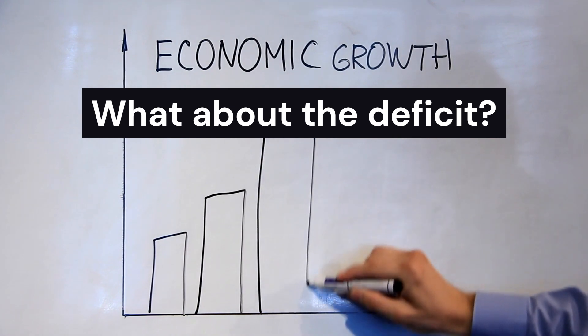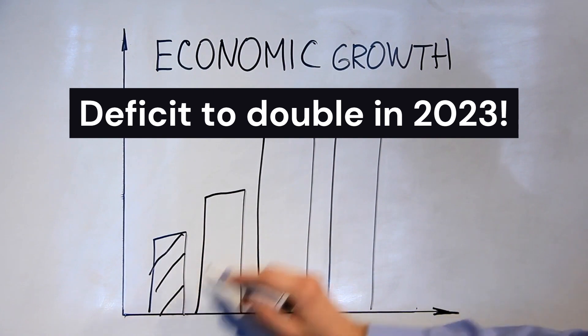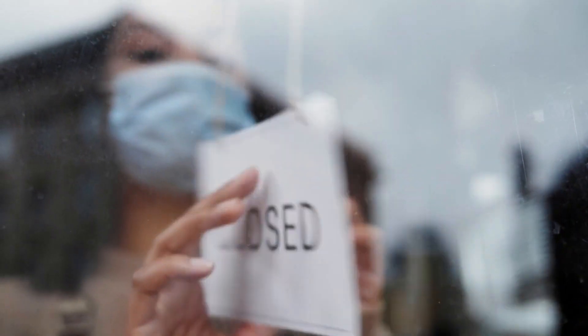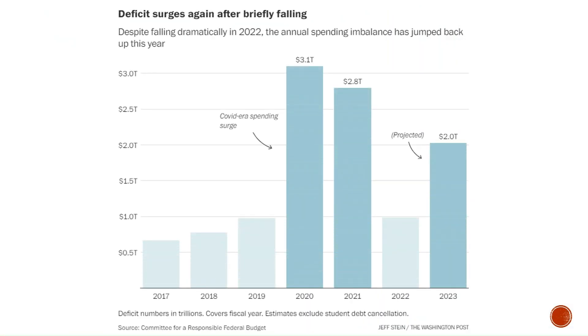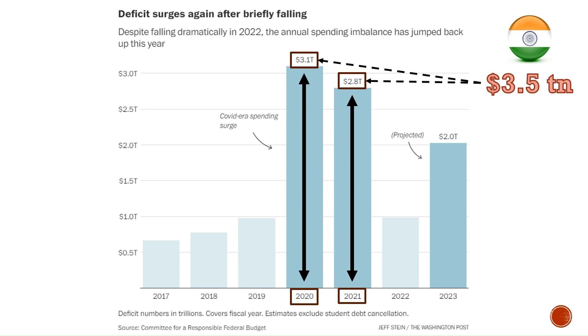But then what about the deficit — should it not be going down? Instead, this year the deficit is expected to double. For context, let's go back to the COVID years. The US government spent a record amount to combat the impact of COVID-19 in 2020 and 2021. As a result, the fiscal deficit jumped to almost $3 trillion both in 2020 and 2021. Think about that for a moment — the size of India's economy is around $3.5 trillion in 2023, and the amount the US government spent in excess of its income is only slightly less than the size of India's entire economy.